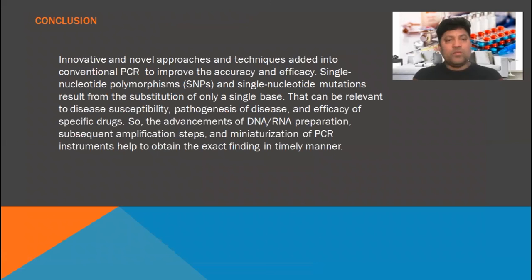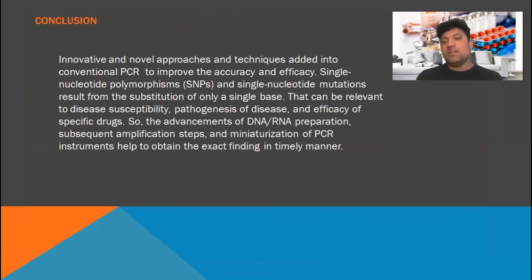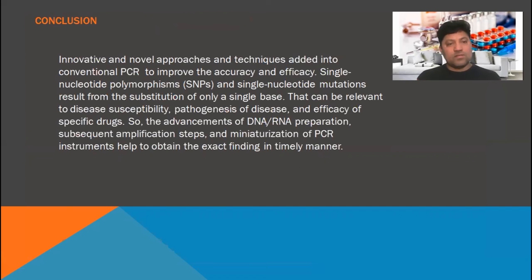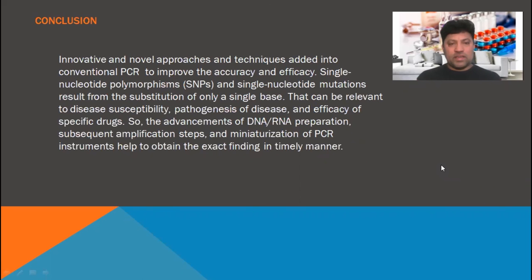In conclusion, innovative and novel approaches and techniques are used in conventional PCR to improve accuracy and efficacy. Single nucleotide polymorphism and single nucleotide mutation result from the substitution of only a single base, which can be relevant to disease susceptibility, pathogenesis of disease, and efficacy of specific drugs. For the advancement of DNA and RNA preparation, subsequent amplification steps and miniaturization — reducing the size of PCR instruments — help to obtain exact findings in a timely manner.